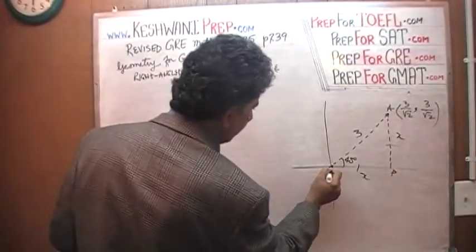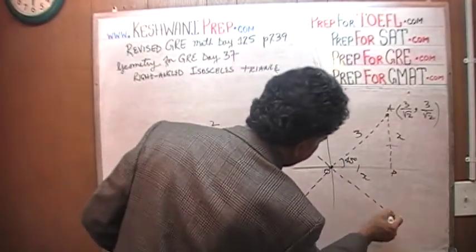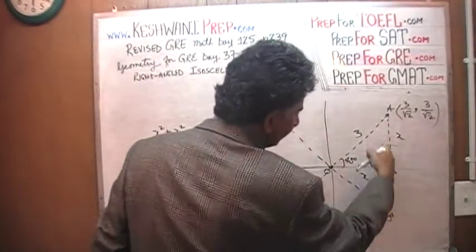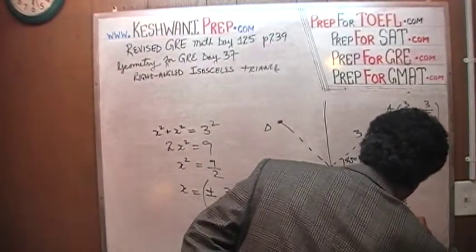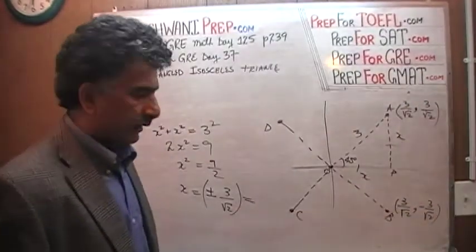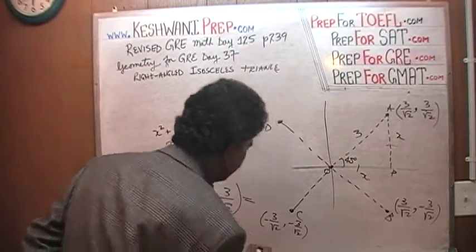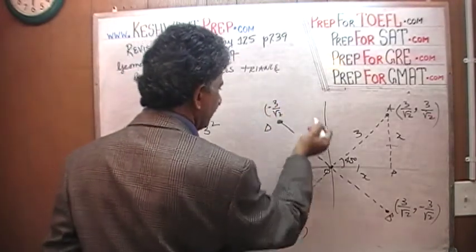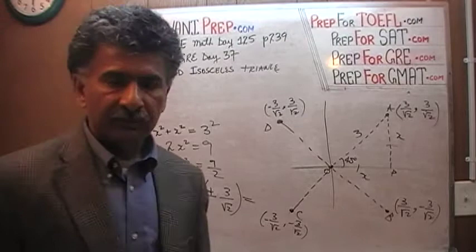What are going to be the coordinates of this guy right here? This one is our B, this is our C, this is our D. Here, X is still positive but Y is negative, so it's 3 over root 2 and negative 3 over root 2. Here, both X and Y are negative, so it's negative 3 over root 2 and negative 3 over root 2. And here, X is negative and Y is positive.